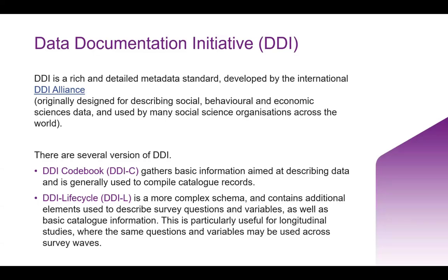DDI, or the Data Documentation Initiative, is a rich and detailed metadata standard which has been developed by the DDI Alliance. There are a couple of different versions of DDI: the DDI Codebook and the DDI Life Cycle. DDI Codebook gathers more basic information, and it's often used to describe collections at a higher level — it's really useful for data catalogs. DDI Life Cycle, on the other hand, is a little bit more complex and allows you to also describe survey questions and variables. DDI Life Cycle might be particularly useful if you're looking at longitudinal studies, where similar questions or variables might be reused across different survey waves, allowing you to identify and compare responses across the same variables.